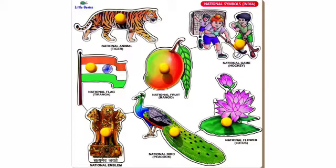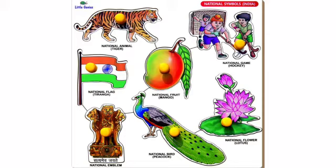India has many national symbols with which it identifies itself and takes pride in them. These symbols have been taken from India's unique flora and fauna, that is plants and animals, and its culture.